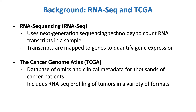As a brief background, RNA sequencing is a method to quantify transcriptomes by counting individual RNA transcripts present in a sample. Transcripts are typically mapped to their associated genes, for instance by aligning to a reference genome, to get overall gene expression. The Cancer Genome Atlas is a large database of analytes and clinical metadata for thousands of cancer patients. Given the rise in RNA sequencing, TCGA includes a large corpus of RNA-seq data in a variety of formats that are publicly available for researchers to analyze.